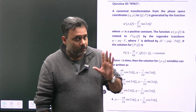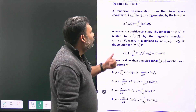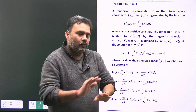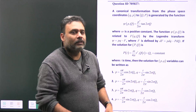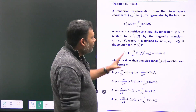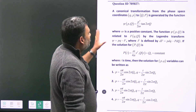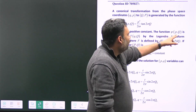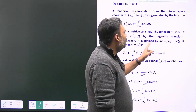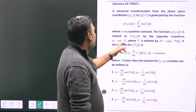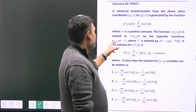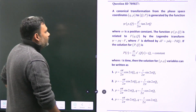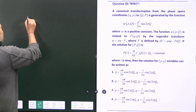Some students might mistakenly treat this as an F3-type generating function, which would lead directly to a wrong and absurd answer. Now, a constant is given, and ψ(p,q) is defined as: ψ(p,q) = pq − f.